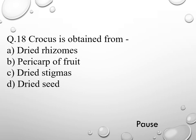Question 18. Crocus is obtained from: option A dried rhizomes, option B pericarp of fruit, option C dried stigmas, and option D dried seed. The right answer is option C, dried stigmas.